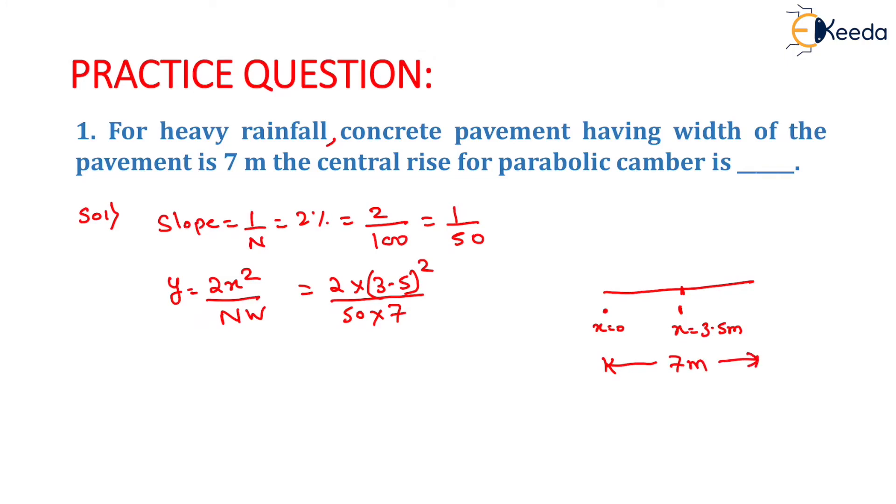Now, we can determine the value of central rise for parabolic camber which will be equals to 0.07 meter. So, for parabolic camber, the central rise will be equals to 0.07 meter.